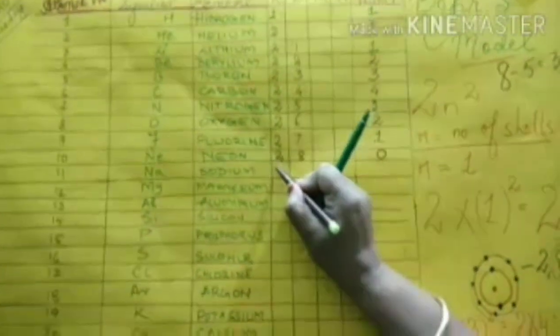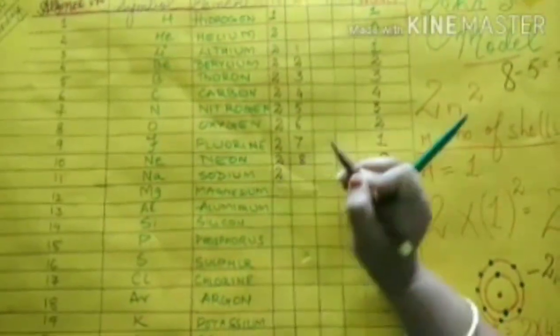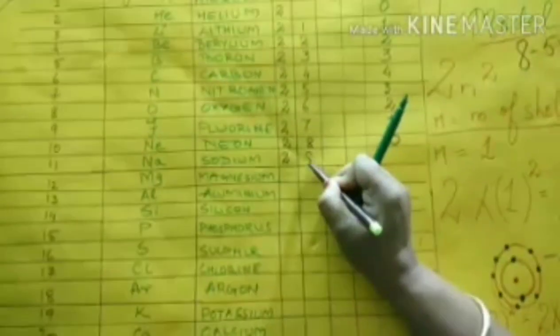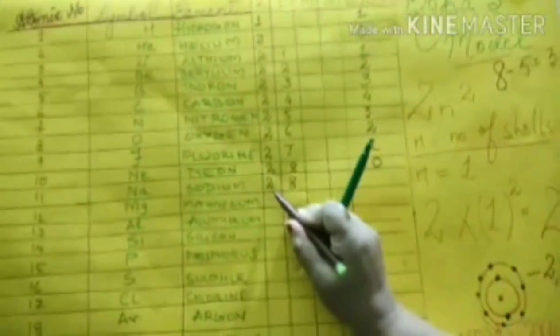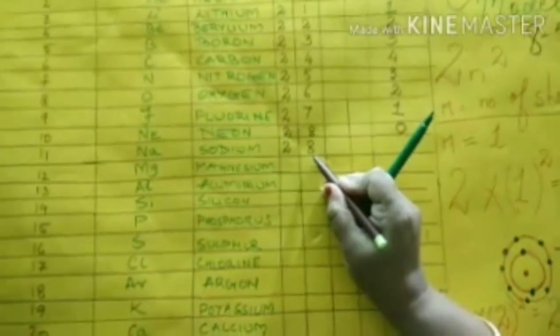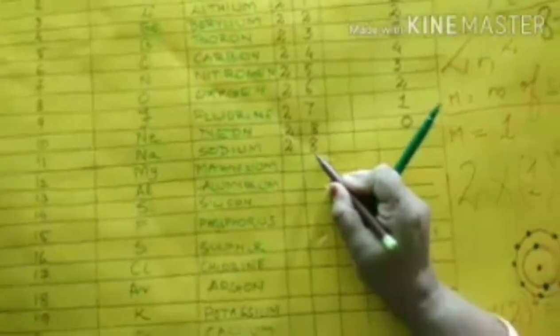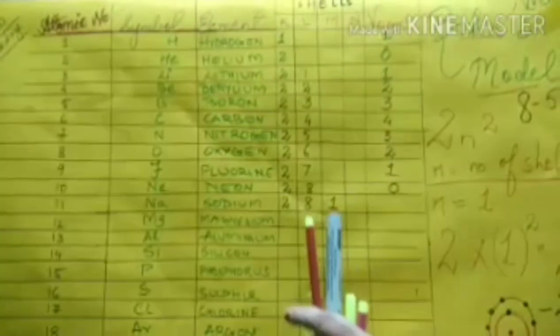11, that is sodium. Let's see. 2, complete. Next one, 8, 8 plus 2, 10, complete. Now both the shells cannot take. You have to move to the third shell. That is again it's 1. I told you, last shell if it is having 1, 2, 3, 4, copy down the same. So sodium is having the valency 1.